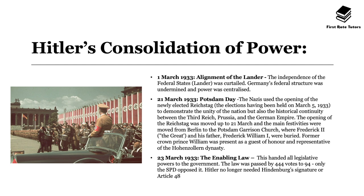On 21st March 1933, which was Potsdam Day, the Nazis used the opening of the newly created and rebuilt Reichstag — elections having been held on 5th March 1933 — to demonstrate the unity of the nation but also the historic continuity between the Third Reich, Prussia and the German Empire.